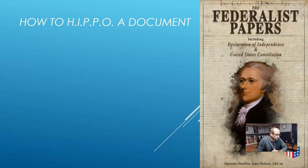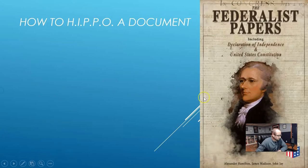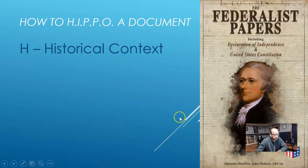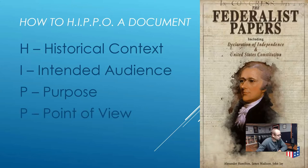The document I chose to HIPPO as an example is one you should all be somewhat familiar with. You learned about it in seventh grade — it is the Federalist Papers, written by Alexander Hamilton, James Madison, and John Jay. For any of you that have Disney Plus or are Hamilton fans, this should be familiar. As we go through the acronym: H stands for historical context, I stands for intended audience, the first P stands for purpose, the second P stands for point of view, and O is outside information.